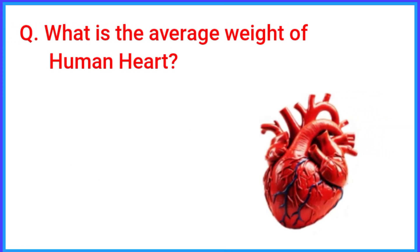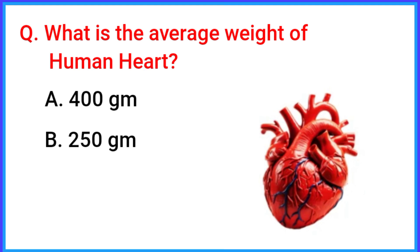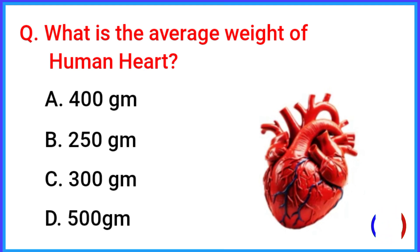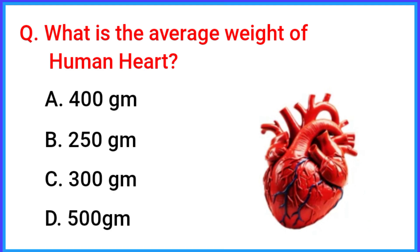What is the average weight of the human heart? The correct answer is option C: 300 grams.